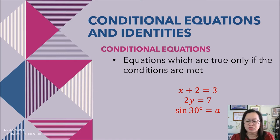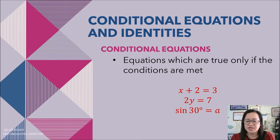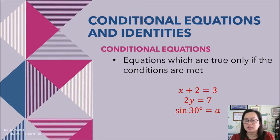In equation number 1, x plus 2 equals 3, this equation is only true if x is equal to 1. In example number 2, 2y equals 7, this equation is true only if y is equal to 7 halves. In the third example, sine 30 degrees is equal to 8, it's only true when a is equal to 1 half.